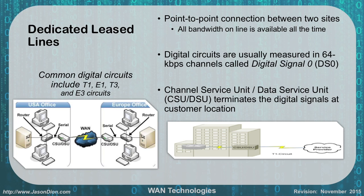Our dedicated leased lines are things like T1s, E1s, T3s, and E3s. These are dedicated circuits that you buy from your telecommunications provider. They provide a point-to-point connection between two different sites, and the nice thing is you get all of the bandwidth all of the time.